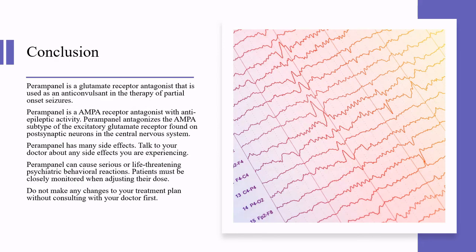In conclusion, perampanel is a glutamate receptor antagonist and AMPA receptor antagonist with antiepileptic activity used in the therapy of partial onset seizures. Perampanel has many side effects — talk to your doctor about any you are experiencing. It can cause serious or life-threatening psychiatric behavioral reactions, and patients must be closely monitored when adjusting their dose. Do not make any changes to your treatment plan without consulting your doctor first.